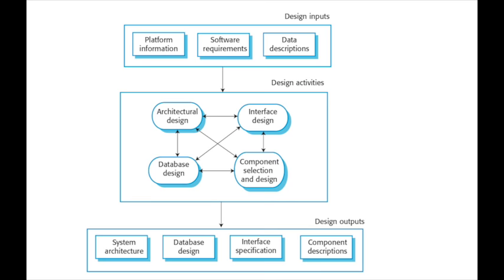We don't usually set out a software design and then implement that design, although sometimes that's still part of the development process. This general model of the design process shows that there's a set of design inputs — information that's required to complete the design — and a set of design activities such as architectural design, component design for designing the individual parts of the system, database design for designing the structure of the data to be processed, and interface design for designing the APIs and external interfaces of the system.